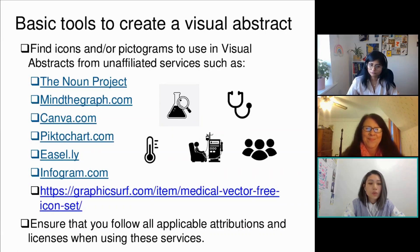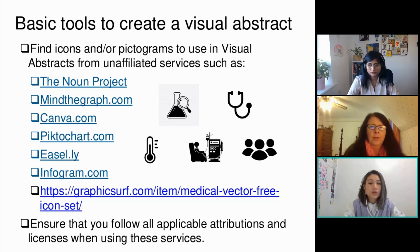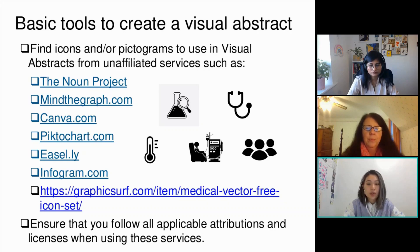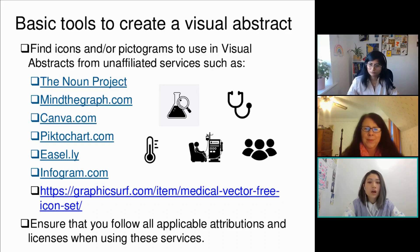Here are some tools to help you create the visual abstract. A lot of visual abstracts are created on a PowerPoint slide, designed to be read left to right or top to bottom. I really recommend the Noun Project if you're using PowerPoint — it has almost every icon you can think of and just requires some creativity. Other options on this list, like Mind the Graph, Canva, Easily, and Infogram, are dedicated platforms where you use built-in templates rather than PowerPoint.